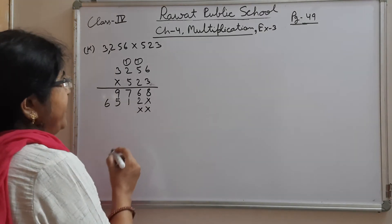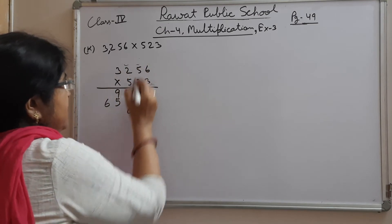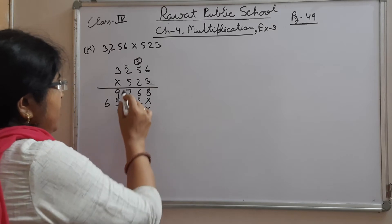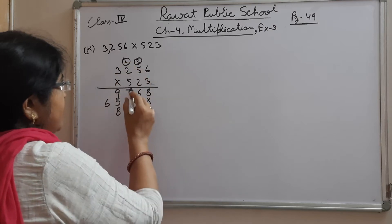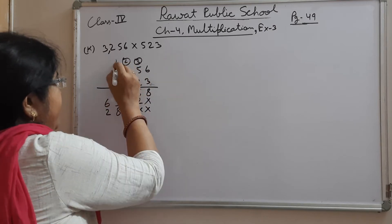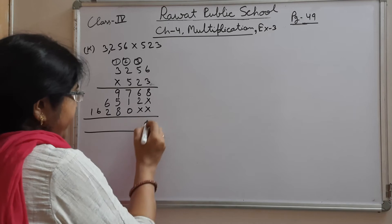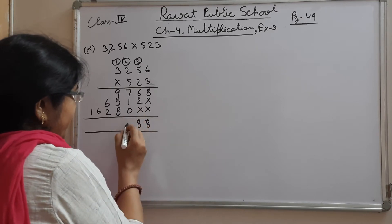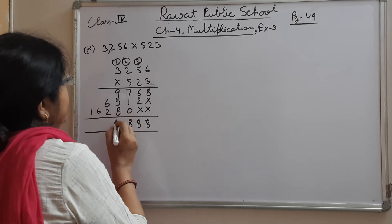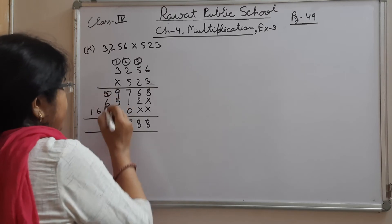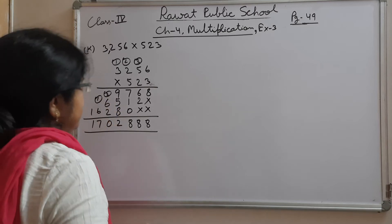Now for the hundreds place, we cross the tens place. 5×6=30, 3 carry over; 5×5=25, plus 3=28, 2 carry over; 5×2=10, plus 2=12, 1 carry over; 5×3=15, plus 1=16. Now we add: 8; 6+2=8; 7; 1; 8; 9+5=14; 14+8=22, 2 carry over; 6+2=8, plus 2=10, 1 carry over; 7 and 1. This is the answer.